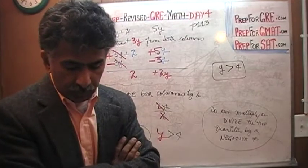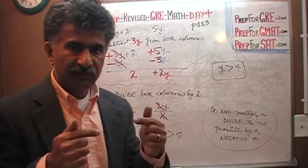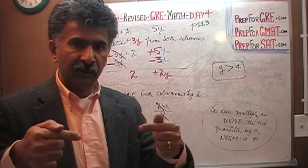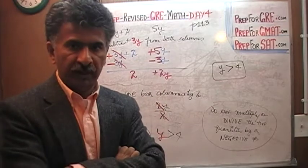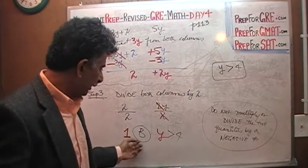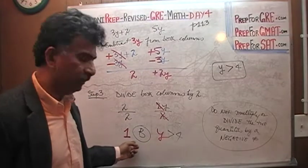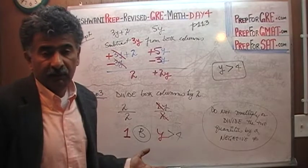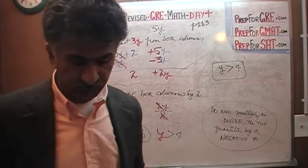In the book, if you read the solutions they give you, they ask you to redo all the steps in reverse order — you don't have to do that. You can stop right here. Which one is bigger — 1 or Y? Of course Y is bigger. Y is bigger than 1 because we know Y is bigger than 4. If Y is bigger than 4, then Y has to be bigger than 1. The answer is B.